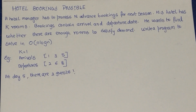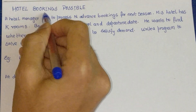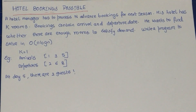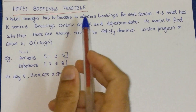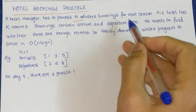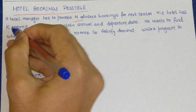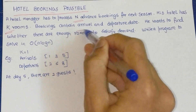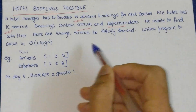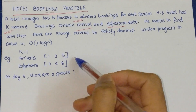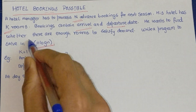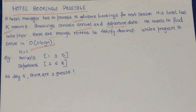The problem we'll be looking at now is hotel booking possible. A hotel manager has to place N advanced bookings for the next season. The hotel has K rooms. Bookings contain arrival and departure dates, and we want to find whether there are enough rooms to satisfy this demand. We need to write a program in O(n log n), which hints that sorting may be necessary.